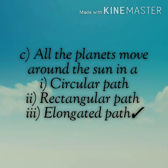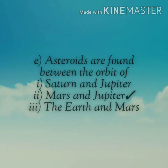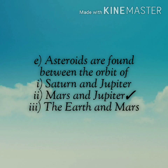C: All the planets move around the sun in a — options: circular path, rectangular path, elongated path. The right answer is elongated path. D: The pole star indicates the direction to the — options: south, north, east. The right answer is north. E: Asteroids are found between the orbit of — options: Saturn and Jupiter, Mars and Jupiter, Earth and Mars. The right answer is Mars and Jupiter.